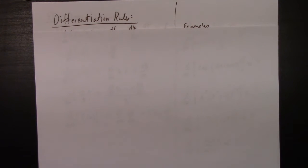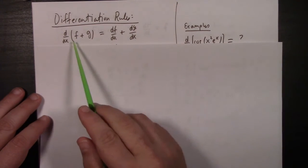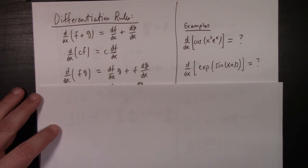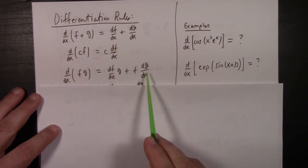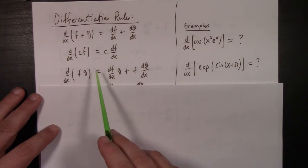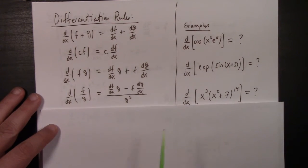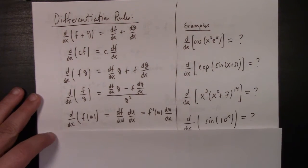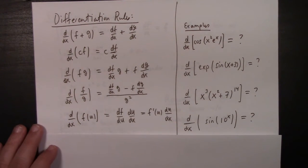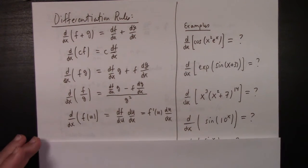Differentiation rules — there are just a few, really. There's linearity: the sum rule and homogeneity, meaning you can pull out a constant. There's the product rule — in operator notation, d/dx of (fg), which is f prime g plus f g prime. There's the quotient rule, of course. And the dreaded chain rule, which you must know without flinching. We will use that many days.